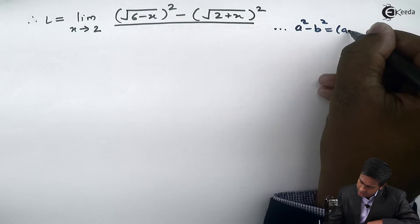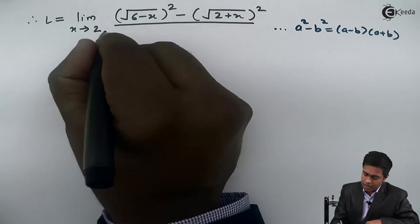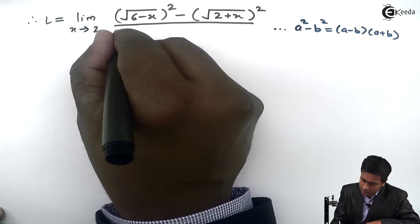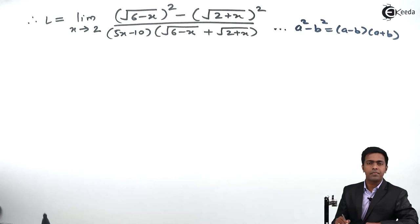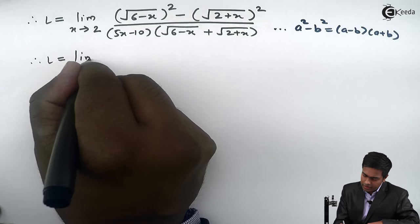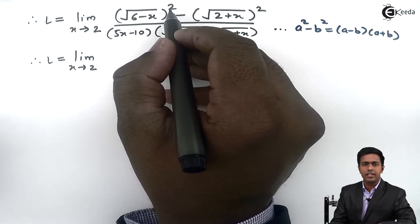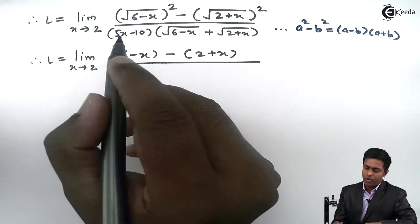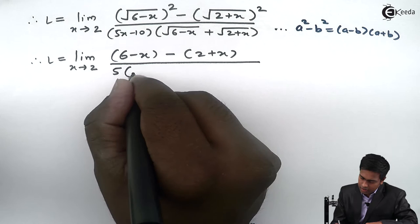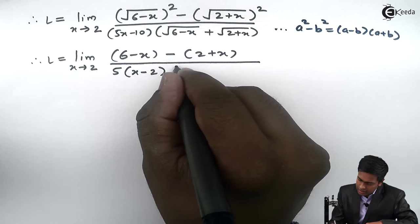I am applying the formula a² minus b² equals (a minus b)(a plus b). In the numerator we got this term, and in the denominator we have (5x minus 10) and in the second bracket we have √(6-x) plus √(2+x). By solving this, the square root and square cancel and we get 6 minus x, similarly we get 2 plus x, whole upon from this term I can take 5 common in the bracket to get (x minus 2).